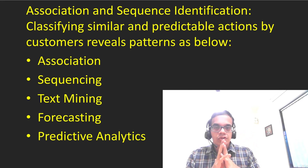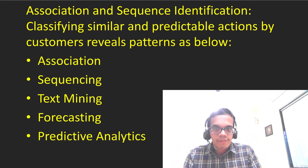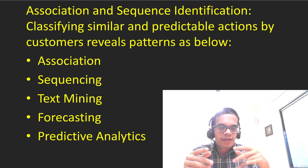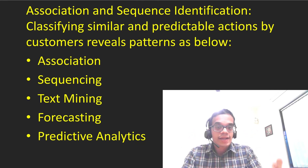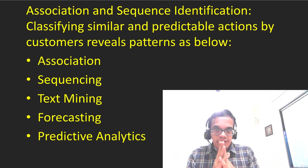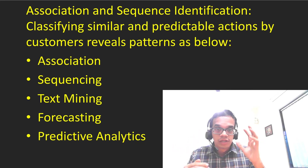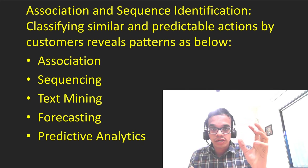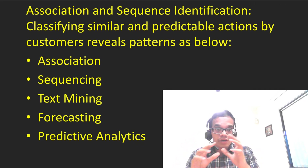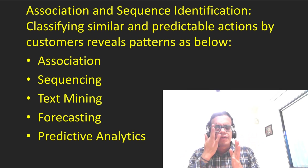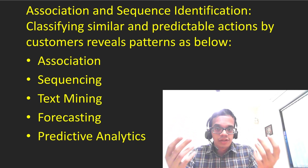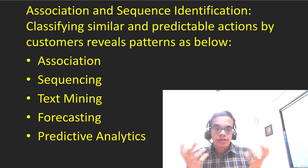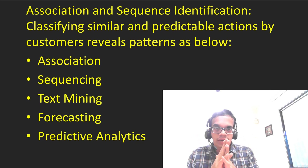Forecasting techniques tell you what can happen in the future — for example, every two weeks my sales are decreasing by X amount, so in the future sales can be projected. Predictive analytics techniques like regression, decision trees, and random forests are algorithms used to predict the future — for example, if X number of consumers are buying with a certain average basket value, what can next period's sales be? These are all predictive algorithms forecasting future outcomes.